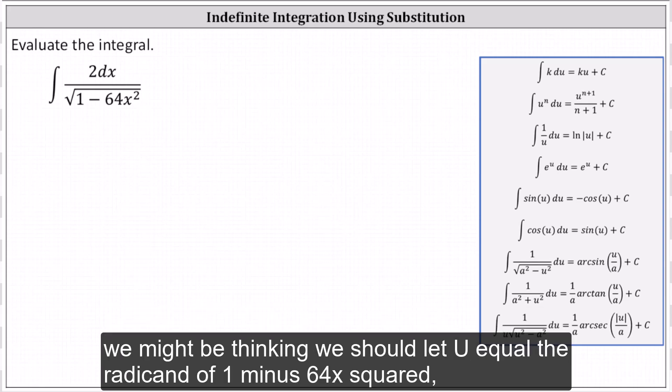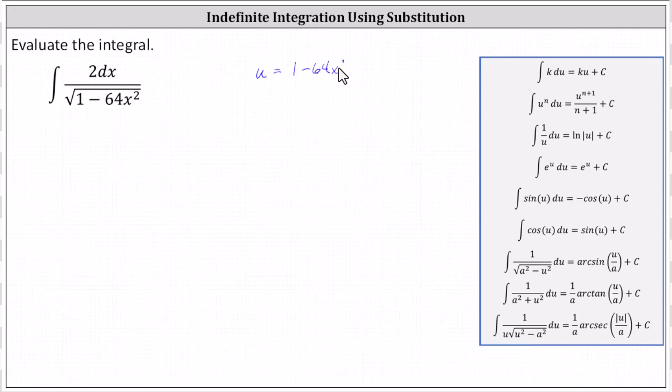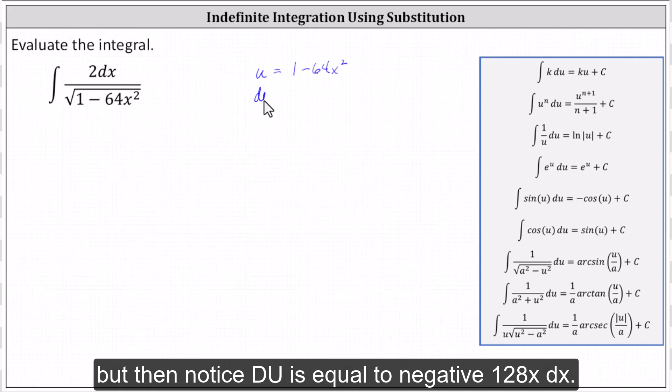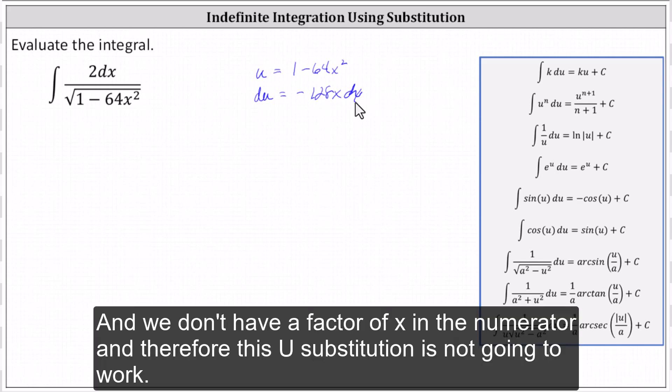we might be thinking we should let u equal the radicand of one minus 64x squared, but then notice du is equal to negative 128x dx, and we don't have a factor of x in the numerator, and therefore this u substitution is not going to work.